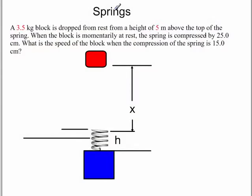This is Dr. Holt. This is a spring problem. I have a 3.5 kg block right here. It's dropped from rest from a height of 5 meters above the top of the spring with this being the top. When the block is momentarily at rest, the spring is compressed 25 cm. What is the speed of the block when the compression of the spring is 15 cm? Basically, we're going to take this block and drop it.